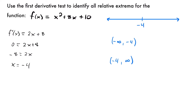Now what we're going to do is pick a value between these two endpoints and plug it into our derivative to see if the result is positive or negative. Remember, the first derivative is the slope of the function. If you plug in a value and get a positive number, the slope is positive. If the outcome is negative, you have a negative slope.